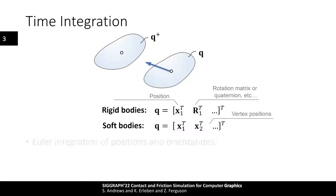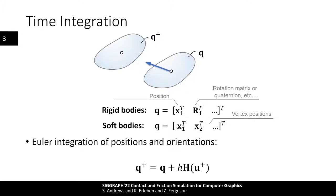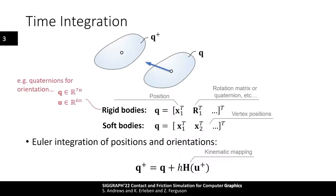We again employ the Euler method to update the generalized positions using the most recent velocities u-plus and the time step. We also note the use of a kinematic mapping function h, which defines a mapping between the generalized velocities and instantaneous position changes. This is needed when the dimensions of the generalized positions do not match the velocities — for instance, when quaternions are used to store the orientations for rigid bodies, there is a dimension mismatch.